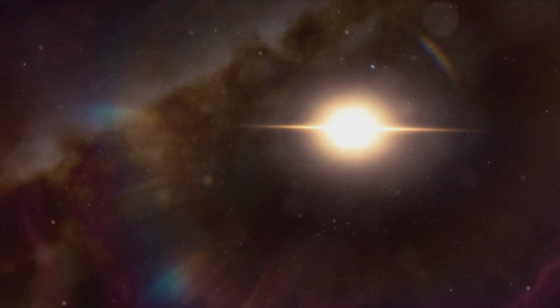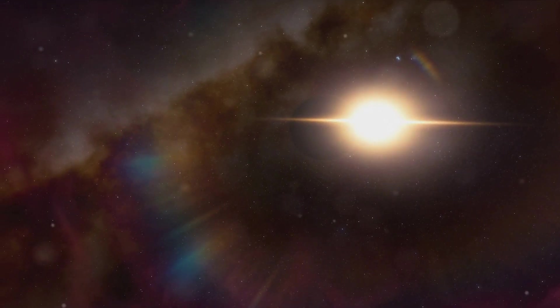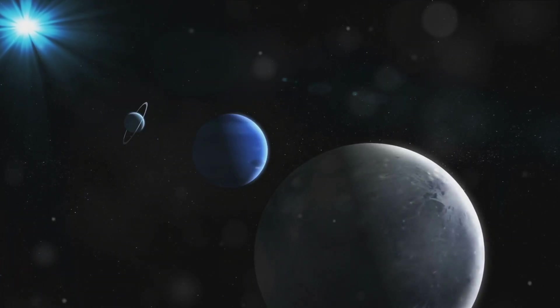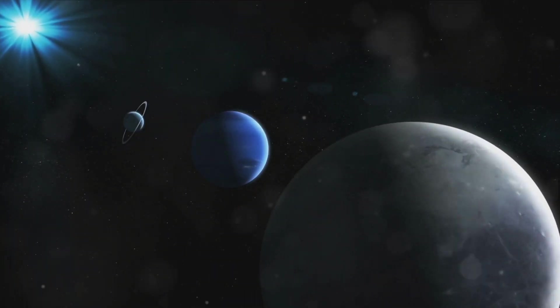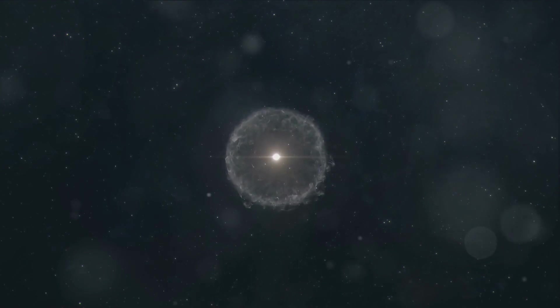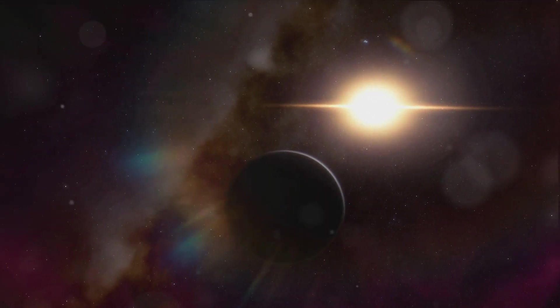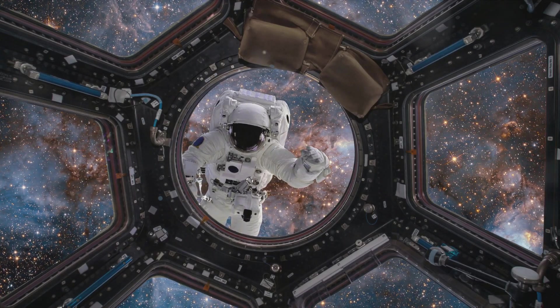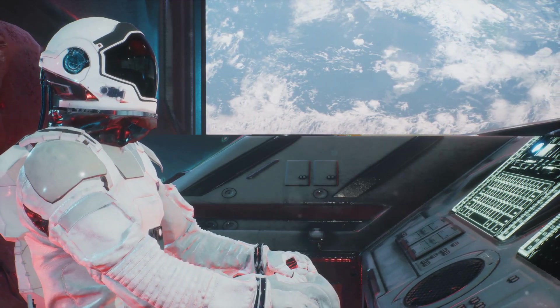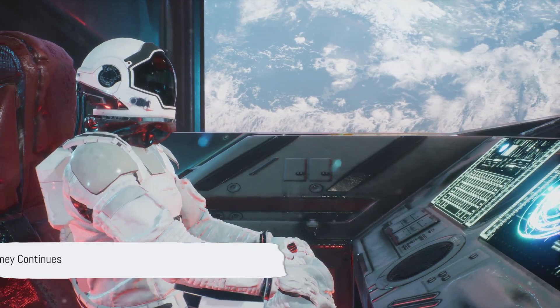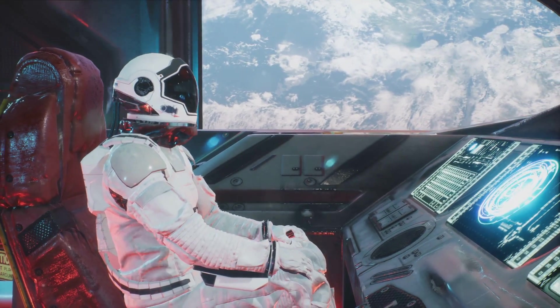Space exploration always leaves us with more questions than answers, and Kepler 385 is no exception. Despite our best efforts to unravel its mysteries, this intriguing planetary system continues to befuddle us. What are the exact compositions of these seven planets? Do any of them harbor conditions amenable to life as we know it? What are the dynamics of their orbits? How did this system form and evolve over billions of years? And the biggest question of them all, are we alone in the universe? These unanswered questions are the driving force behind our relentless quest for knowledge. The mysteries of space are vast and numerous, each one a tantalizing puzzle waiting to be solved. And while we may not have all the answers now, our journey of discovery is far from over. Who knows what other mysteries we might uncover?